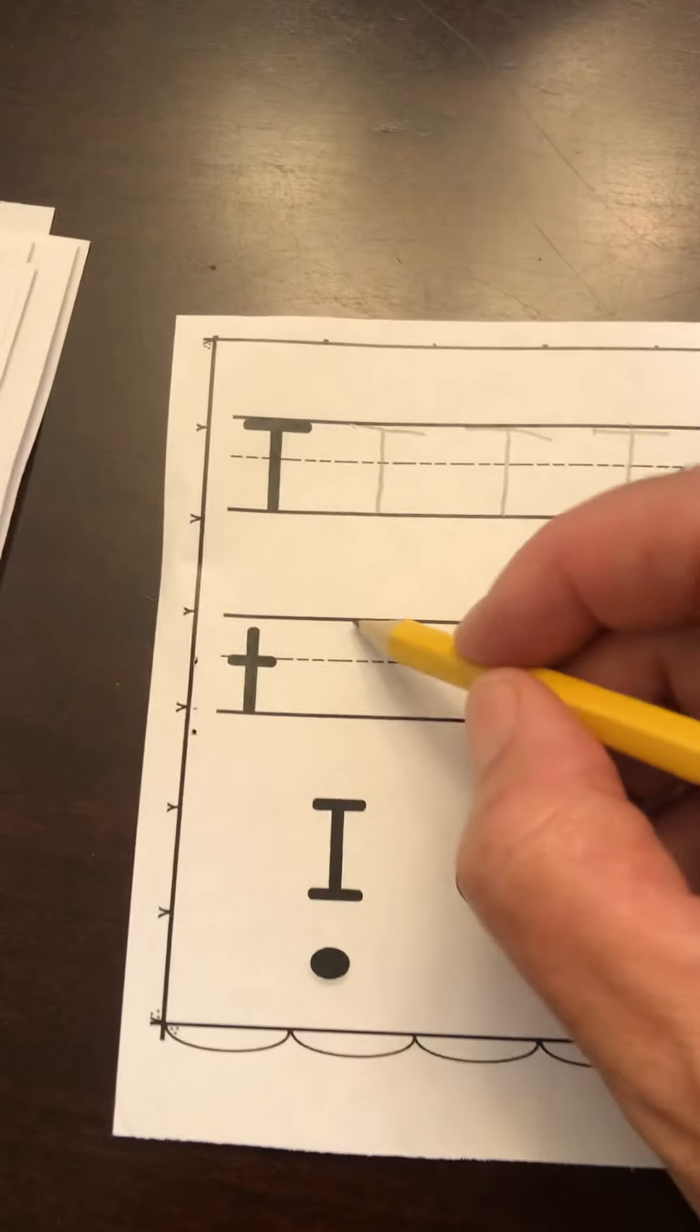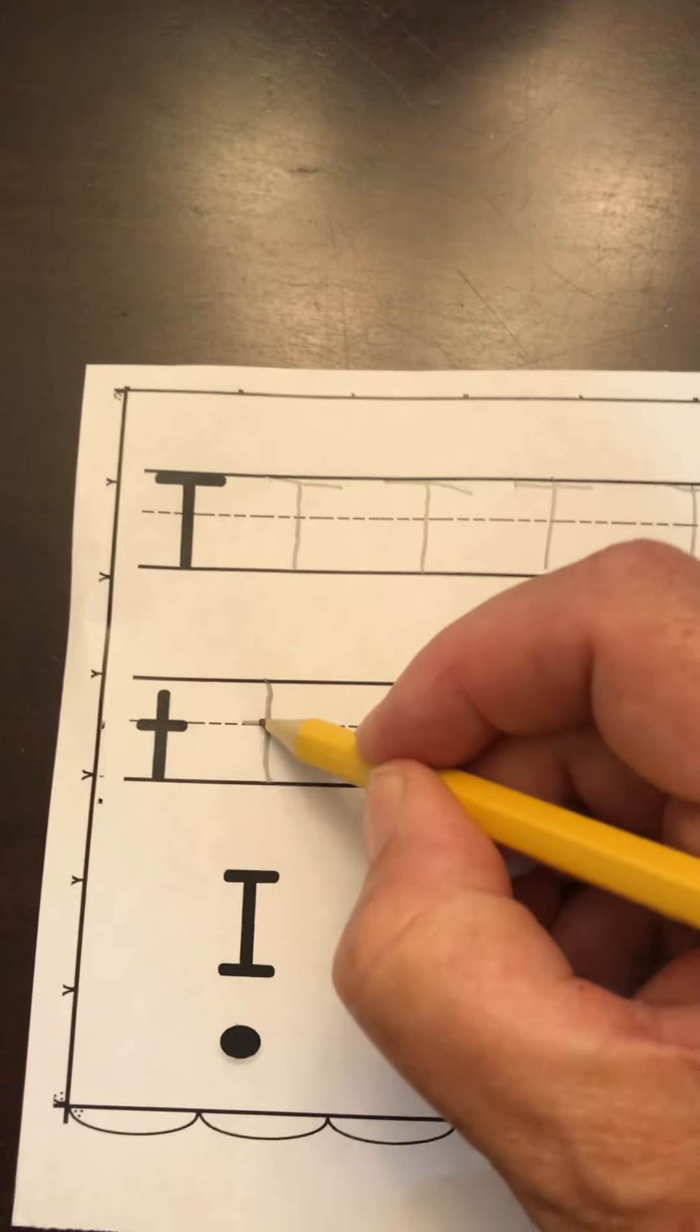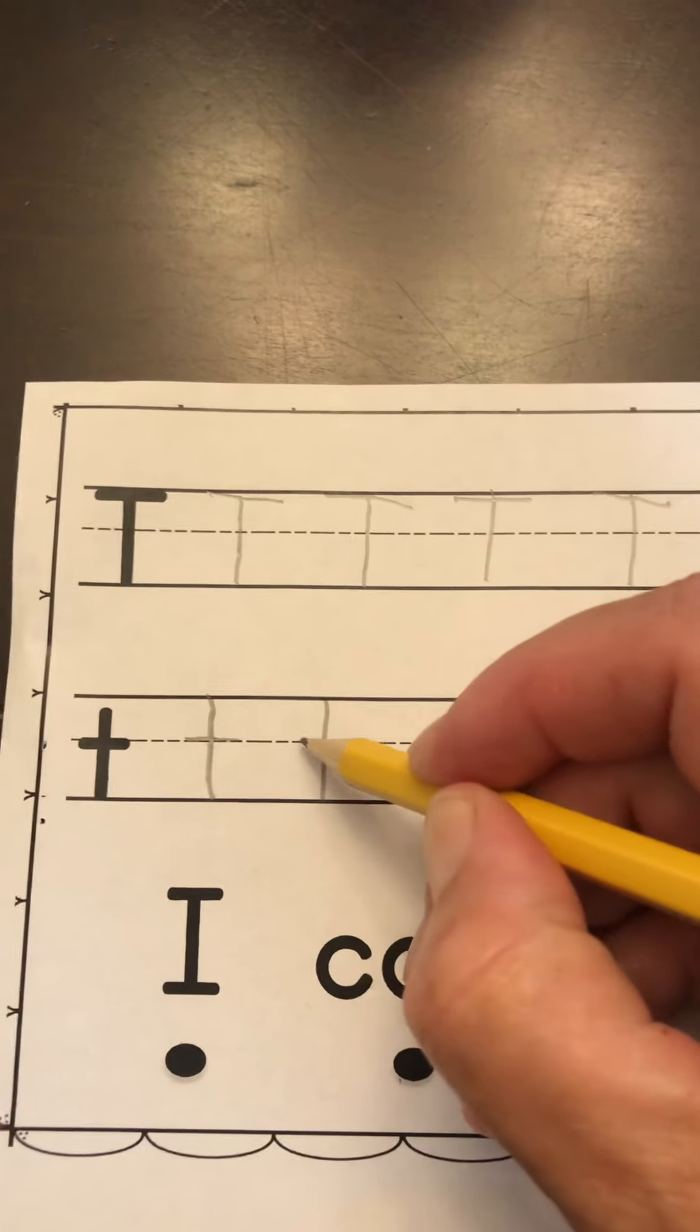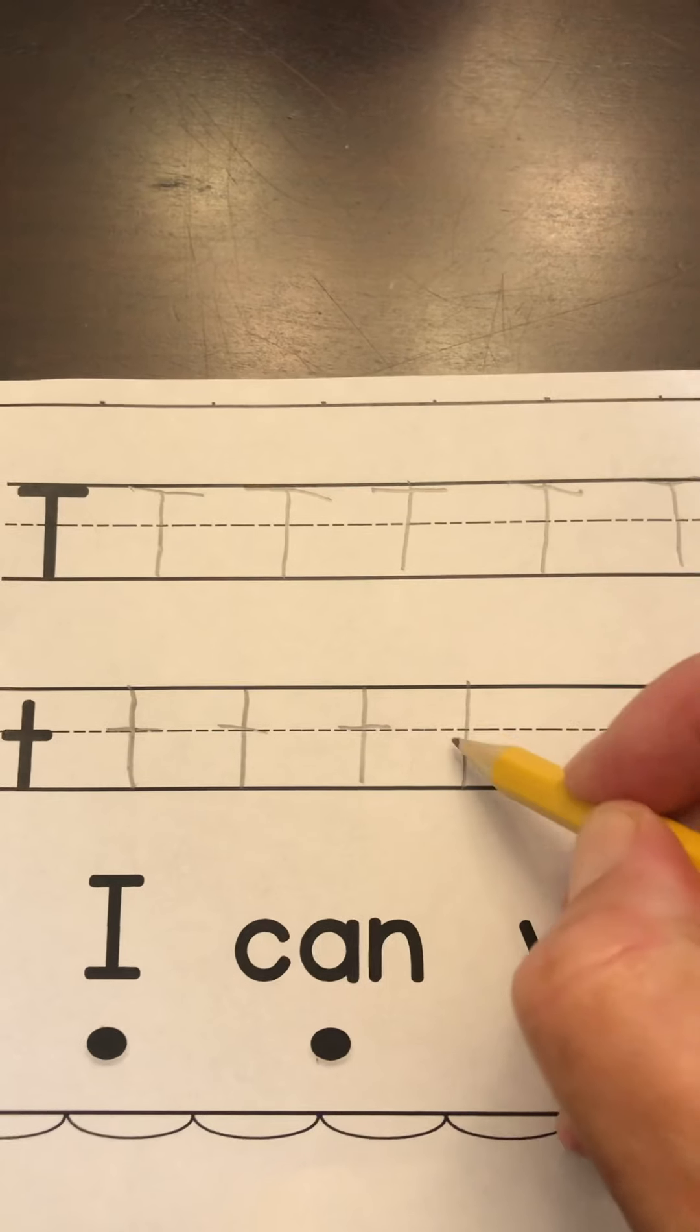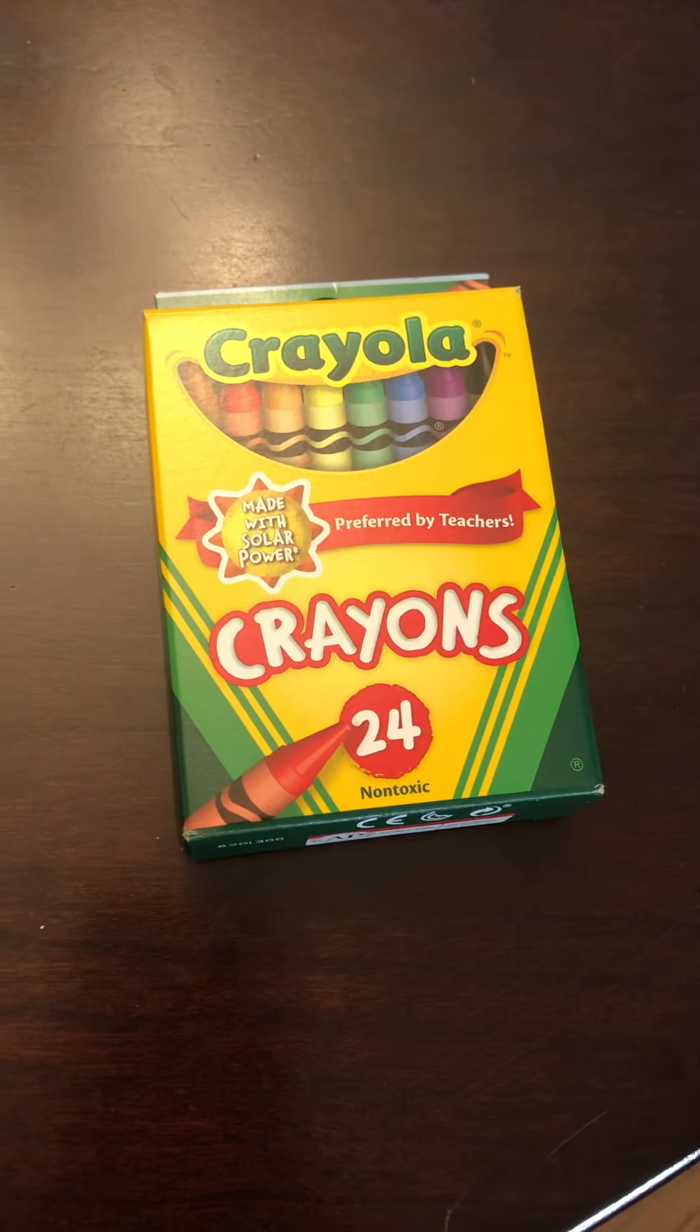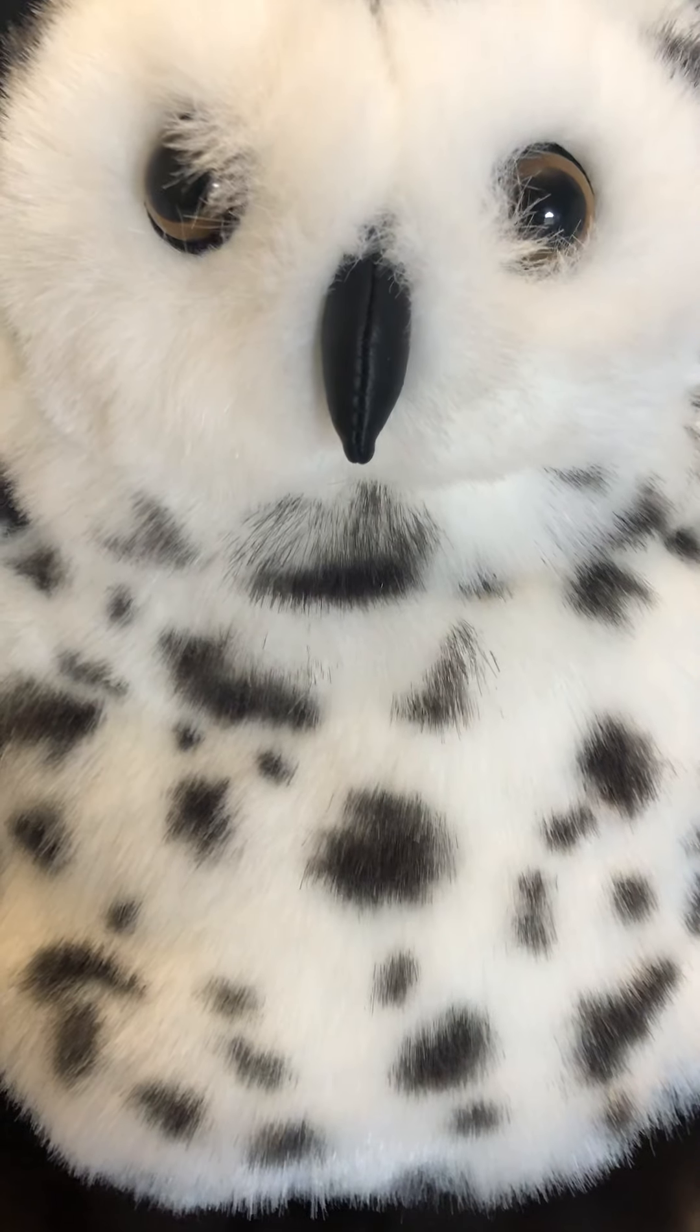And then some lowercase T's. Start on the skyline. Go down to the grass line. Cross on the plain line. That dotted line is called the plain line. And that's where you cross for a lowercase T. And then after you make your T's, all five of them, you can color your book. And you will make Echo the Owl very happy.